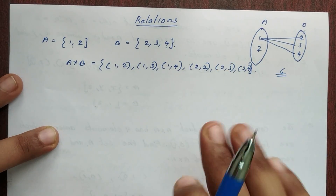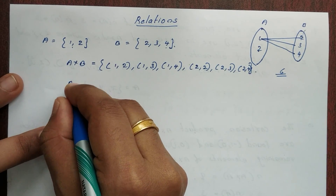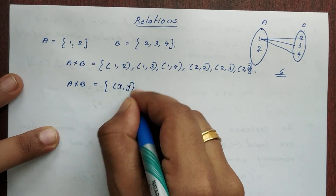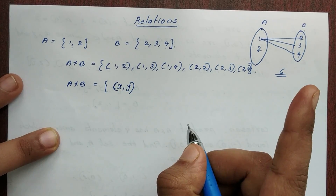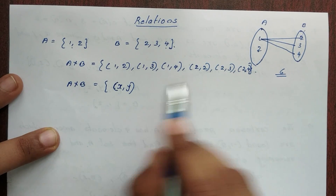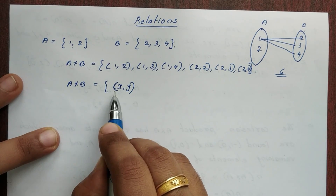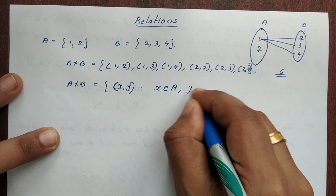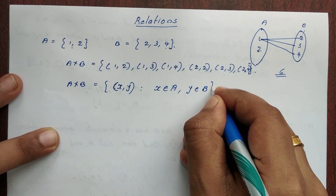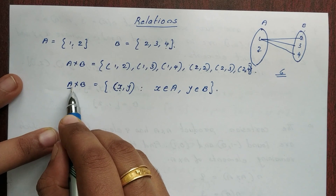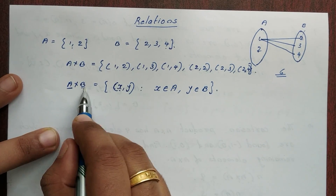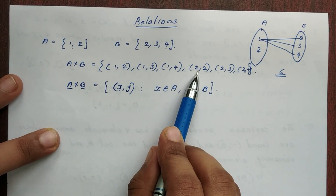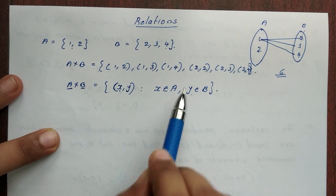A cross B in roster form. Then in set builder form: A cross B is equal to the set of all ordered pairs (x, y) such that x belongs to A and y belongs to B. That means x equals elements of A and y equals elements of B. This is the roster method, and this is the set builder method.